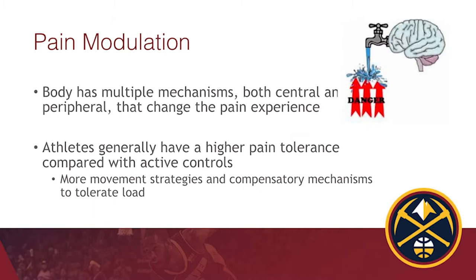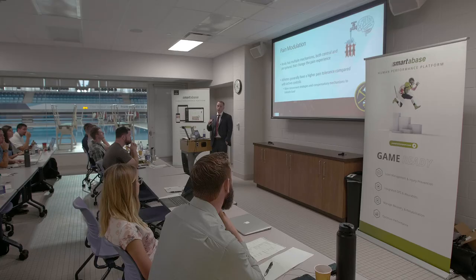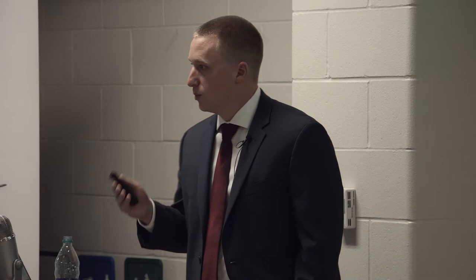There are also descending pathways for pain modulation. Endogenous opioid release isn't to down-regulate pain coming from the nerve, but instead to decrease nervous system signals to the brain. We can decrease that signaling and ultimately decrease pain perception — particularly in athletes who have a higher pain tolerance. We see this study after study. Some of that is their movement strategies, and some is because they are healthy and fit.